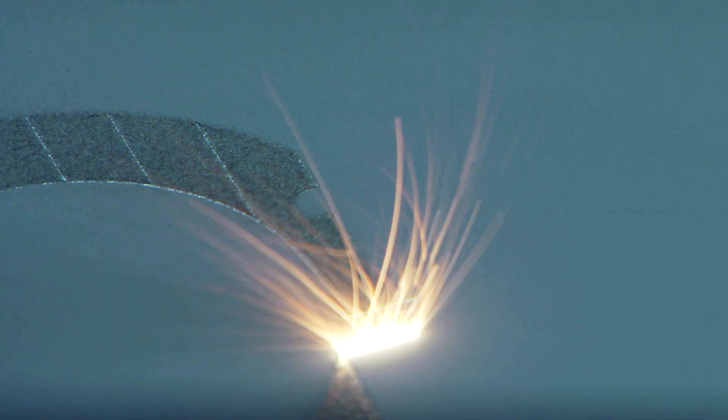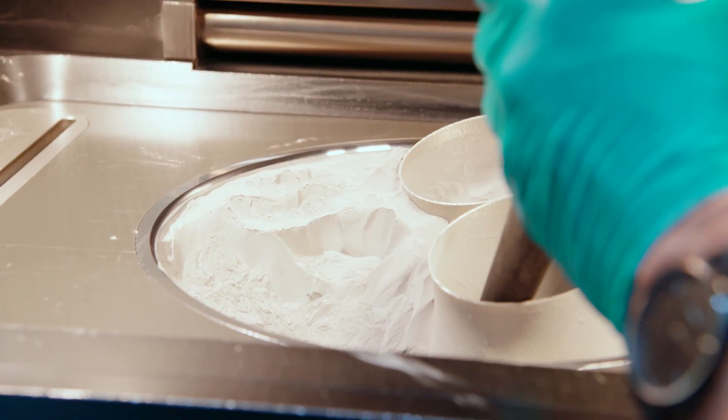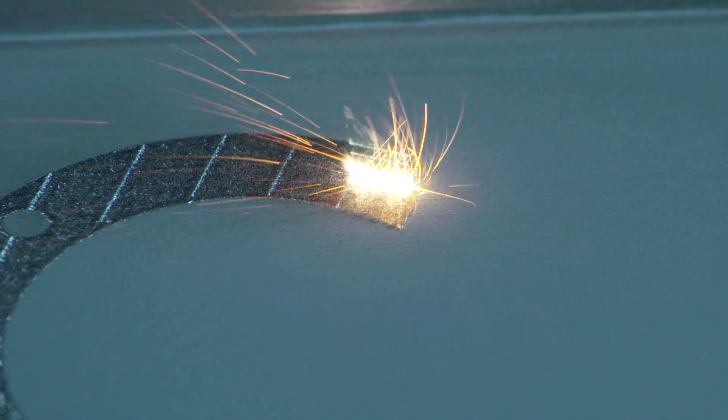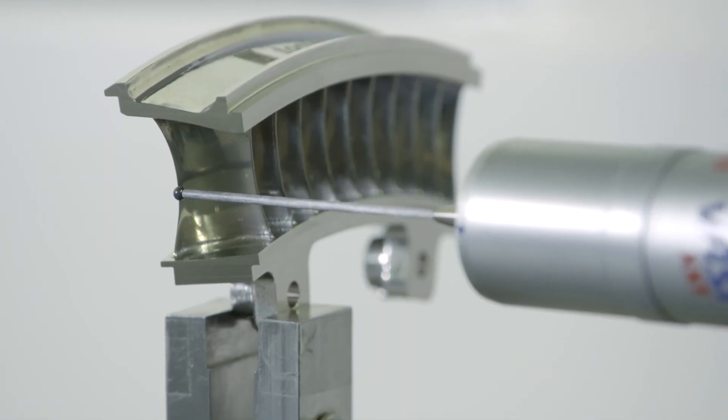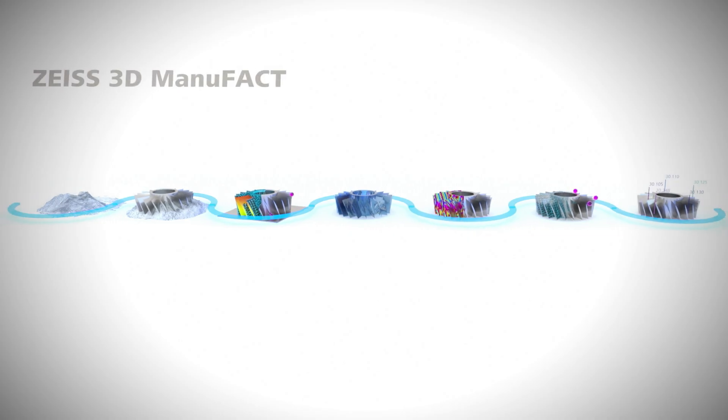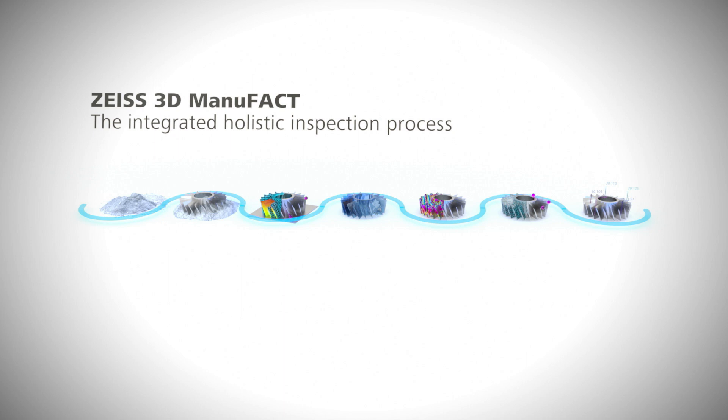Industrial parts melted layer by layer from powder. 3D printing is revolutionizing manufacturing. But additive manufacturing also means big challenges for quality assurance. With Zeiss 3D Manufakt, Zeiss offers a holistic quality control solution for every step of this production technology.